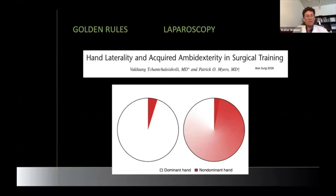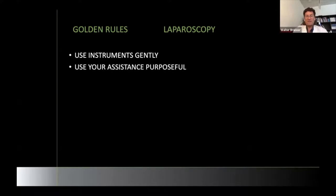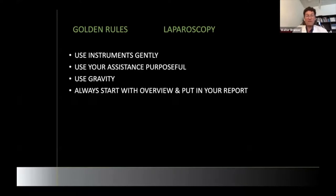You should be aware that sometimes your instruments work better coming from one side than the other, and you should switch instruments to the other side accordingly. You should always use instruments very gently, not rupturing tissue. Use your assistance purposefully — some assistants are more in your way than helping, so position their instrument perfectly for you. Use gravity, always start with an overview and put it in your report.